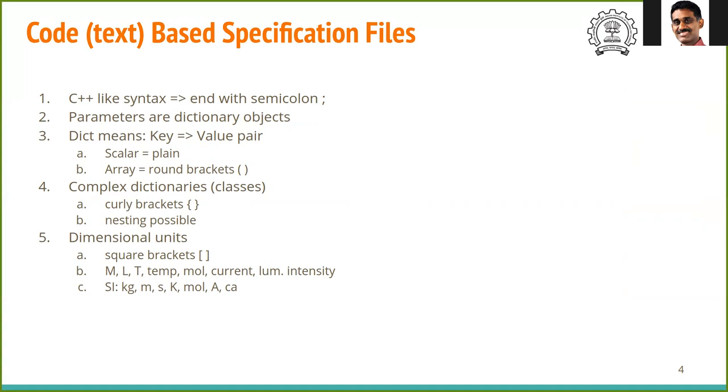Inside all these files, as I told you, it looks like a small C program. The syntax is very similar to C++ syntax. Every statement has to end with a semicolon. This is not a full-fledged C program, but the syntax looks very similar. All the parameters are represented in what is known as a dictionary object. A dictionary object means a key and a value. People who are familiar with Python will immediately recognize what a dictionary is.